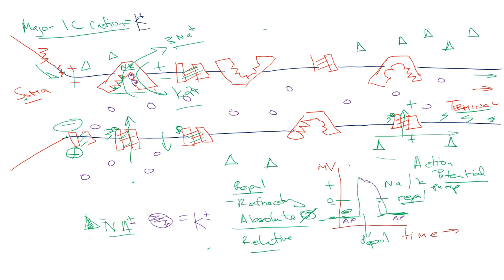Once sodium has rushed in, potassium leaks out and the cell tries to reach equilibrium. We close the sodium channels, eventually close the potassium channels, and then repolarize using the pump: three sodium pumped out, two potassium pumped in. That gives us the charge difference — the polarity — more positive outside, more negative inside. There's a refractory period in between: if we haven't repolarized and a signal comes early (absolute refractory), nothing happens. If we're partway there (relative refractory), we get a partial depolarization.